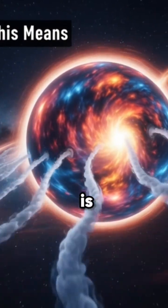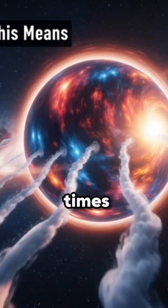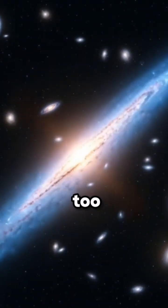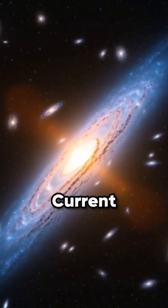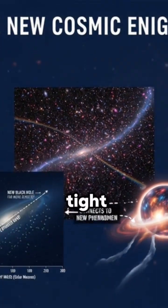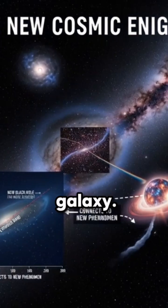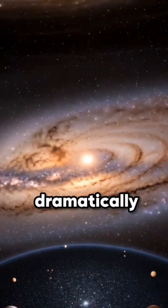The black hole is already about 100 million times the mass of our sun, and critically, it's too massive for its host galaxy. Current models suggest a tight relationship. A black hole grows in step with its galaxy. This one is dramatically overmassive.